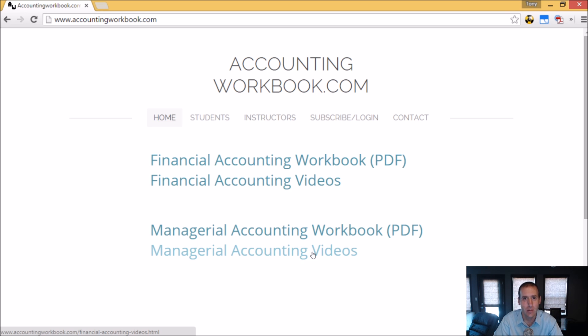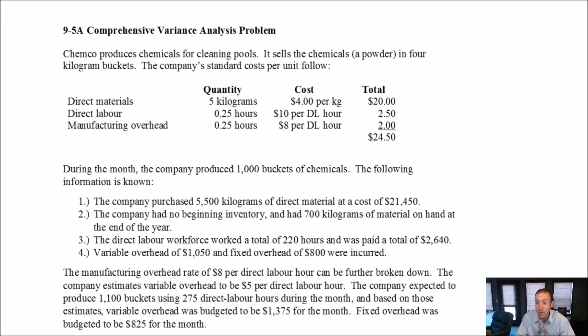Okay, let's get started with the problem. Let's examine problem 95A, a comprehensive variance analysis problem. So this is a kitchen sink kind of a problem. We're going to be doing material, labor, variable and fixed overhead variances, all of which we've done in individual problems. Now we're going to do them all together. The challenge here isn't any greater than any of the individual problems, but it's just finding the information, right? Knowing which information goes with which variances.